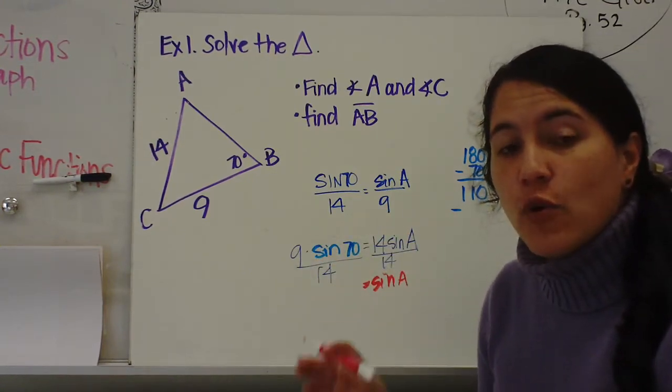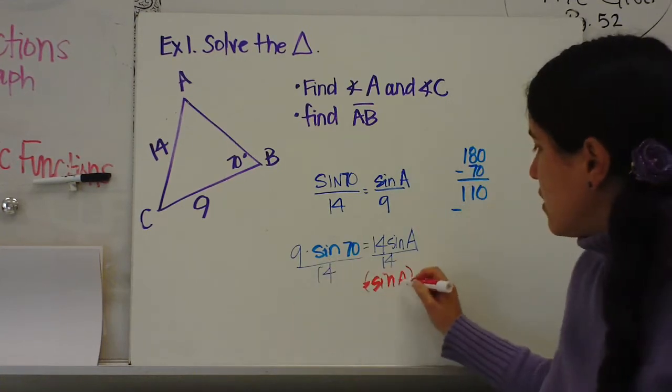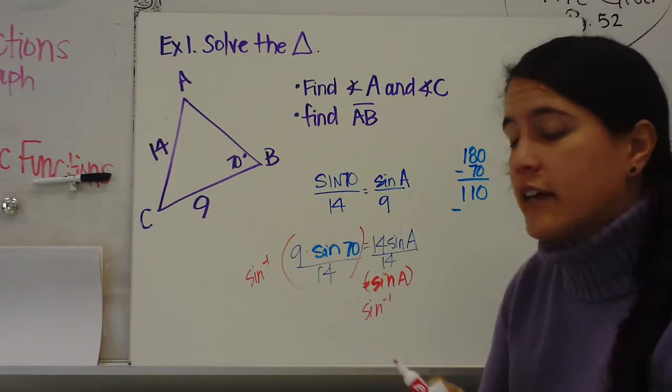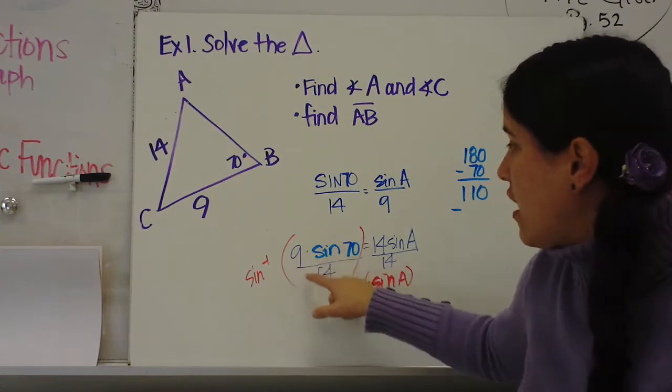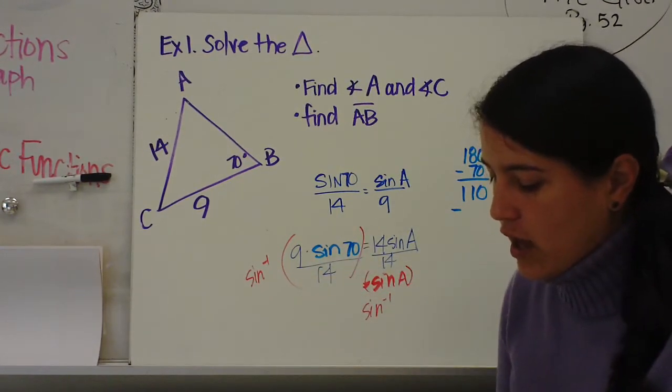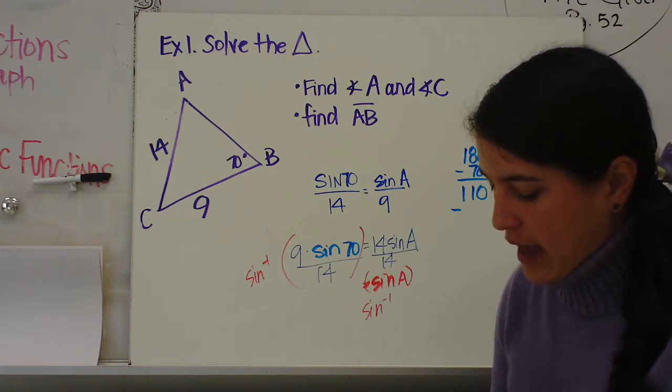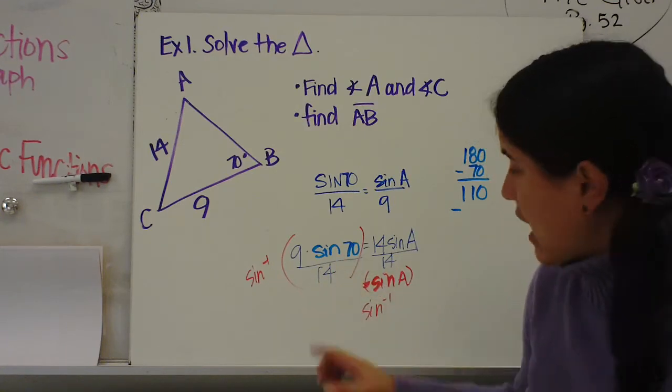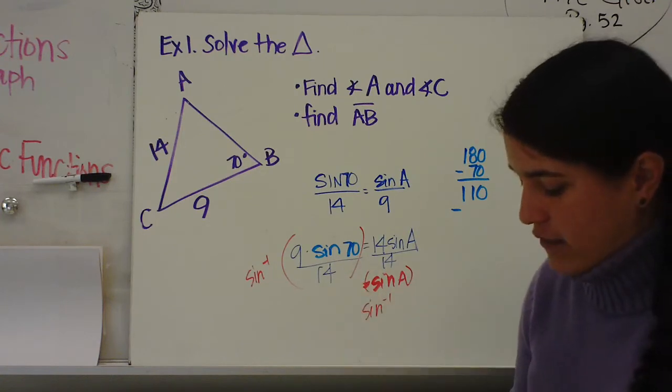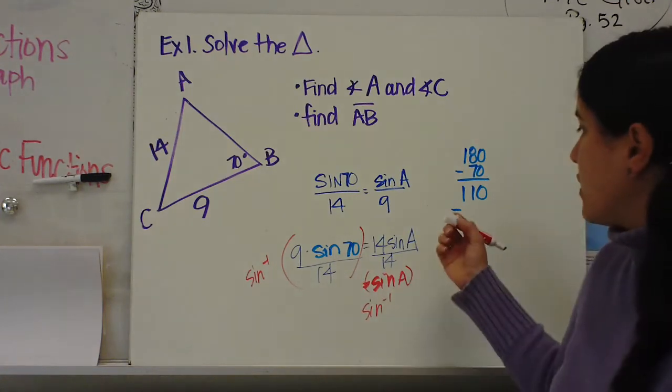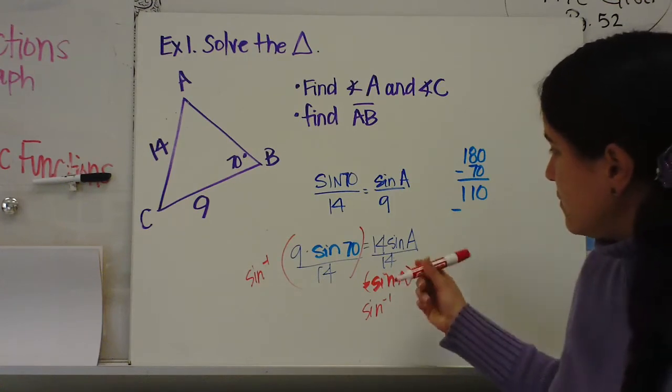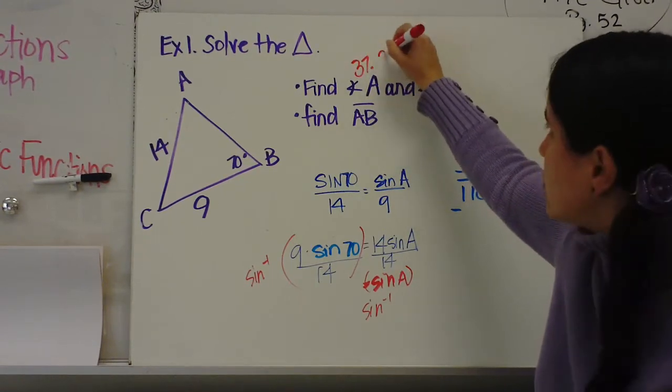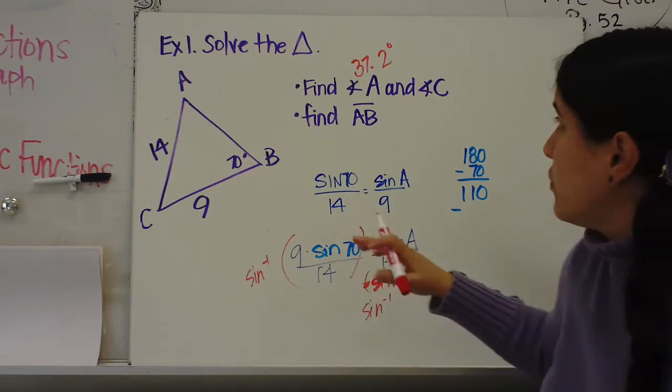But because we are looking for the angle, we need to use the inverse sine. So what I'm going to type in my calculator is the inverse sine of all of this. Don't forget to move your calculator to degrees. I'm going to type in the inverse sine of 9 times the sine of 70 divided by 14. And I'm going to get angle A. Angle A is 37.2 degrees. So that's angle A, 37.2.